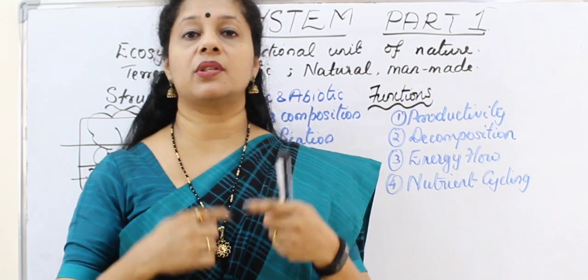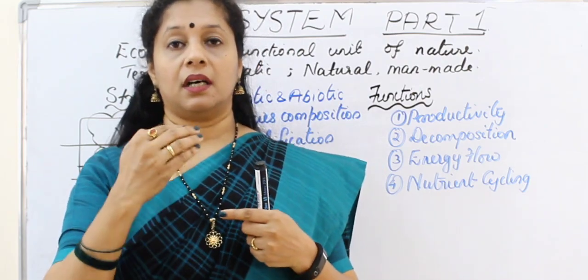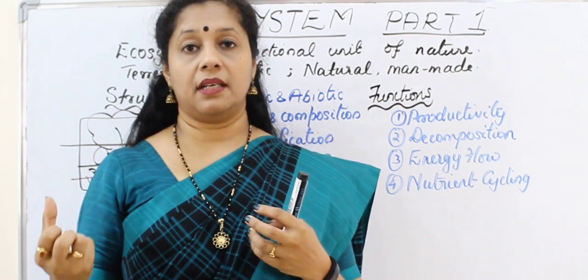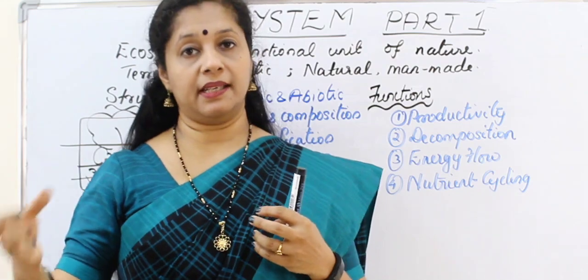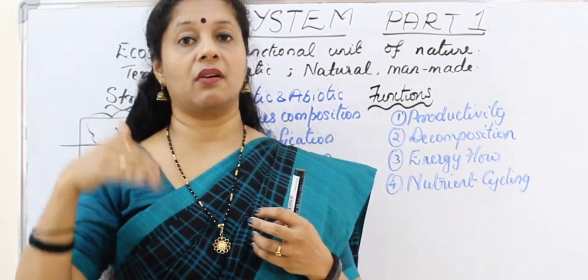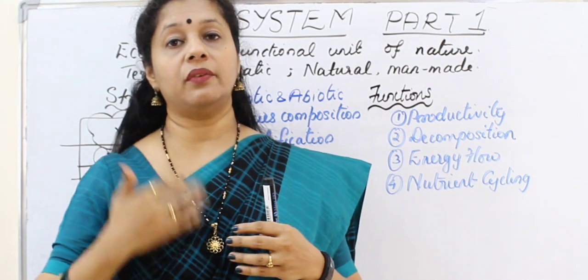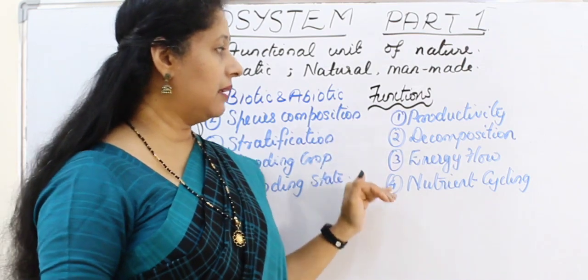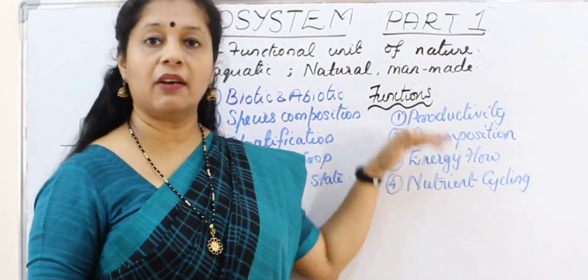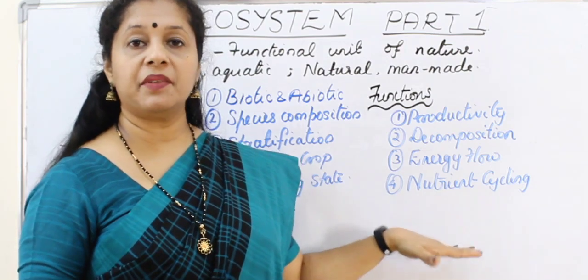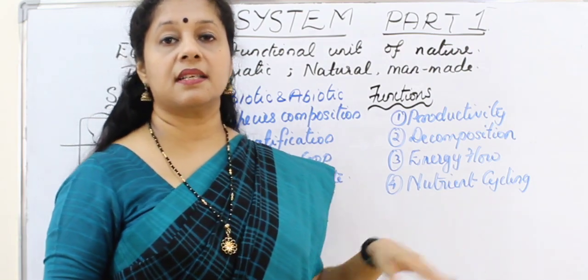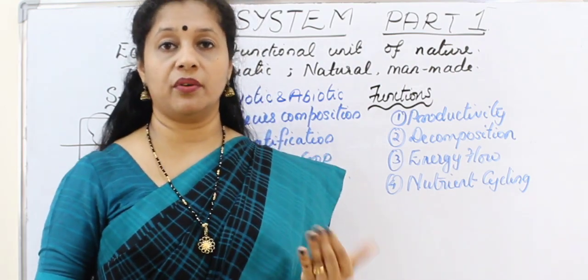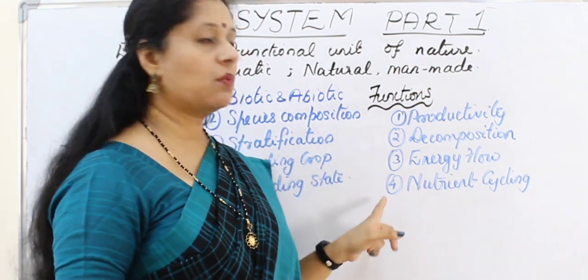And finally, nutrient cycling also should happen because once organisms absorb nutrients from the soil, like plants absorb nutrients from the soil, by eating it animals will get it. When plants and animals die, it will go back to the original source, maybe to soil or earth. So this kind of nutrient cycling is also a part of the ecosystem. These are the four main functions explained in this chapter. Apart from this, one more portion is ecological succession — xerarch succession and hydrarch succession — but that portion has been removed from the syllabus now. We will be discussing each one in detail.